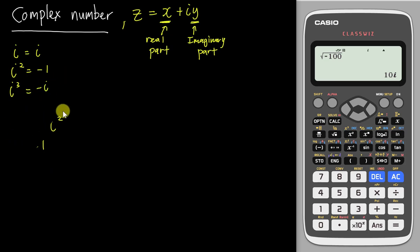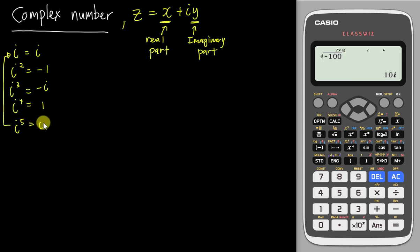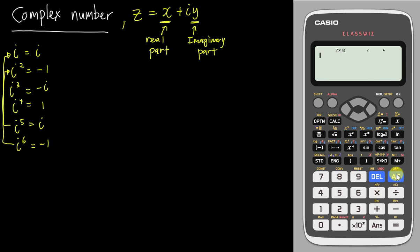So i to the power of four gives us one. i to the power of five cycles back to i (same as i to the power one), and i to the power of six goes back to negative one (same as i squared), and so on. If you don't believe me, you can type i into the calculator — you should see a purple i — and then type i to the power of six; the calculator will tell you it's negative one.